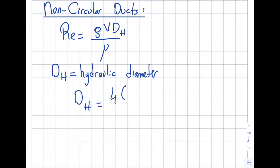And the way hydraulic diameter is defined is four times the cross sectional area divided by wetted perimeter.